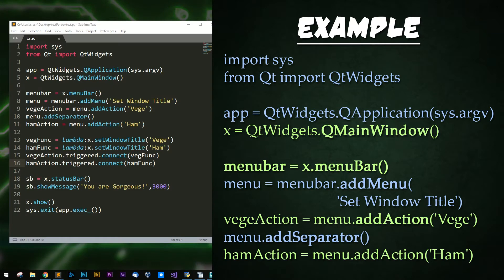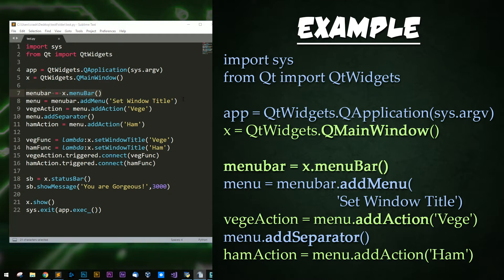Let's examine the code that made this window. At the top, you'll notice that we have two import lines — the order doesn't matter. We then instance our application, then instance our QMainWindow, which is replacing our QWidget from the previous tutorial. Next, we get the menu bar from our main window and add a menu to it called 'Set Window Title.' We then add one action called Veggie, a separator, and then another action called Ham.